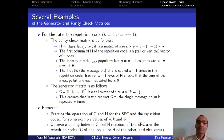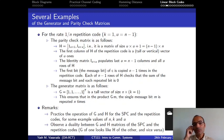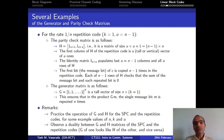The parity check matrix essentially ensures that the modulo-2 sum of the first bit (the message bit) and any of the other bits is zero. This has to be the case because we are replicating the message bit n minus 1 times, so the first bit and any of the other bits cannot be unequal. That is simply what this H matrix ensures.